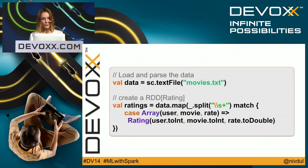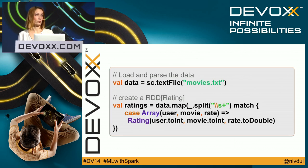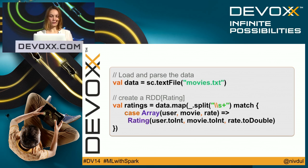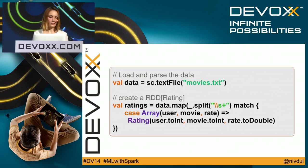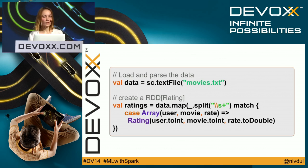Now I'll use MLlib. The first step is to load and parse the data — preparing the data to run the algorithm. Remember, this is very important because you create a model from your data, so you need to choose the right data. Here, the raw data is an RDD, but I need to create an RDD of Ratings objects.